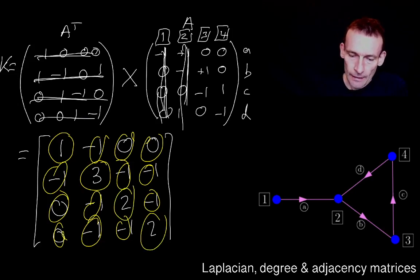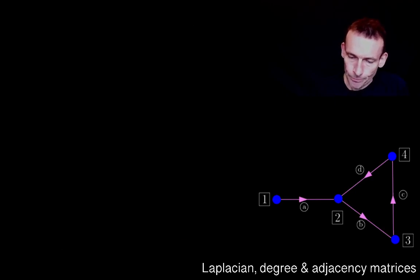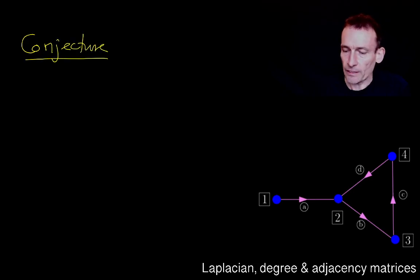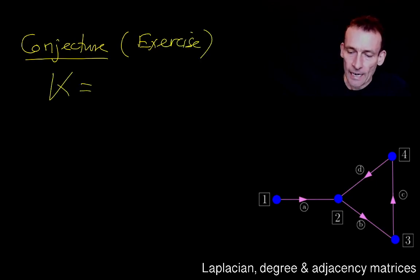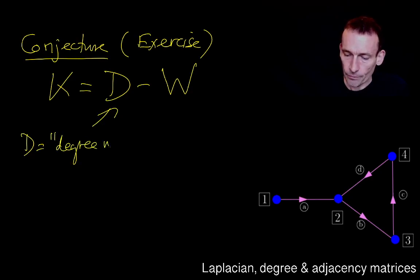I have a conjecture. This is a conjecture but it's basically a little exercise for you to prove. I can write any K as D minus W, where this is called the degree matrix. So it's diagonal.